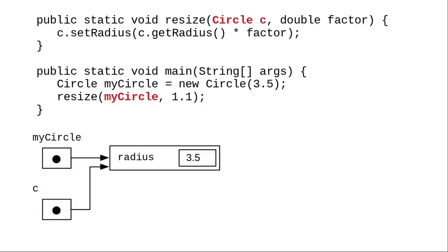When we pass myCircle to the method, the reference to myCircle is copied into parameter C. Because both C and myCircle refer to the same object, when we update the radius of C and exit the resize method, myCircle will have its property updated.